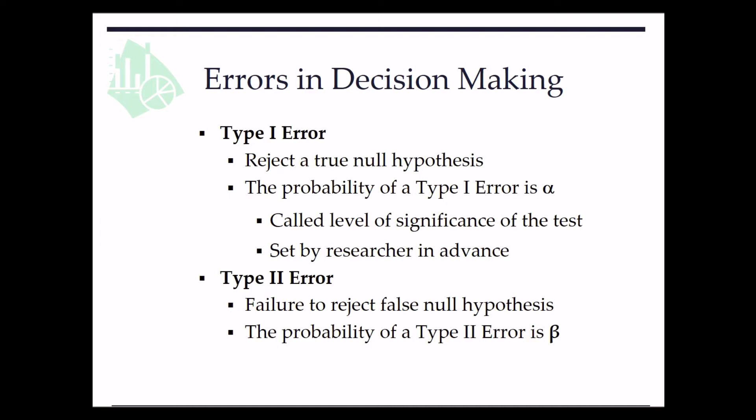Type 2 error means we fail to reject false null hypothesis. That is, a person goes to a test for COVID-19. Actually, the person has no such a disease. He's healthy. But the doctors, after some test, make a claim that this person is with COVID-19. So here the doctors made a type 2 error.